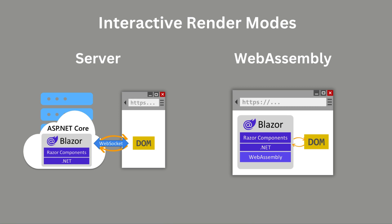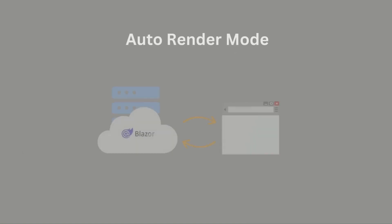The second approach, interactive WebAssembly rendering, initially has a longer load time while the .NET runtime is downloaded. But once it's done, it is cached and available for future use. As a result, it offloads the entire workload from the server to the client. There is also a third interactive render mode that combines the strengths of the previous two: the interactive Auto render mode.